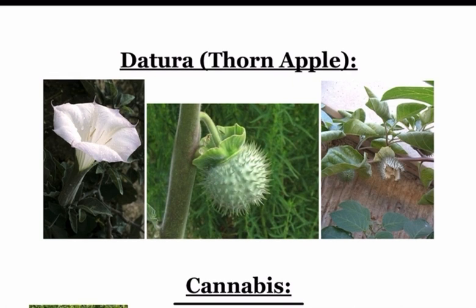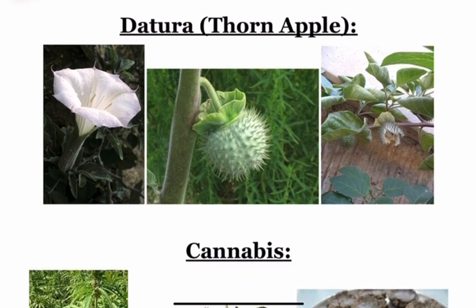Next is Datura, also called as the Thorn Apple, Railway Poison, or Roadside Poison. It is commonly used for robbery. All the parts of this plant are toxic but seeds are the most toxic. The active principle is Hyoscine or Atropine. It has all the anticholinergic effects like dry skin, dry mouth, dilatation of pupil, delirium, drunken gait, death, and retention of urine. For treatment we are going to use Physostigmine.